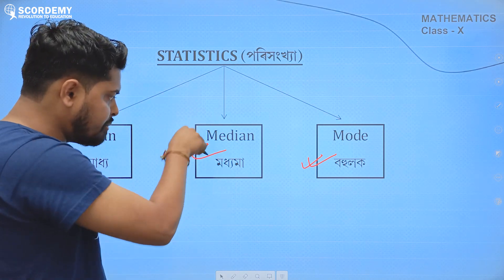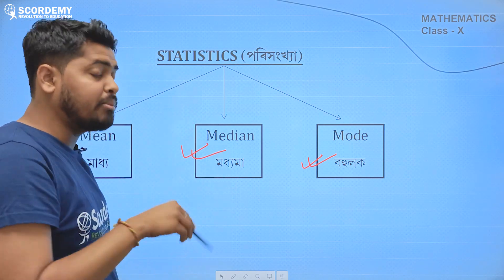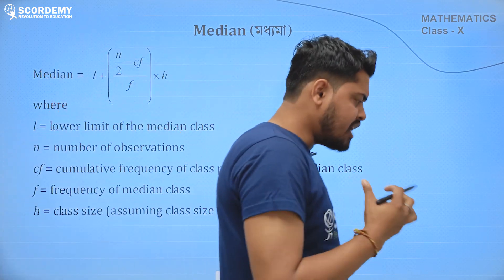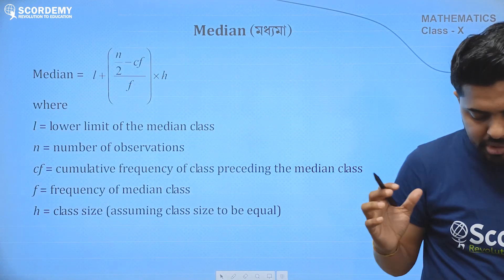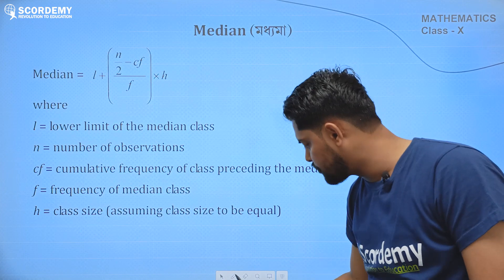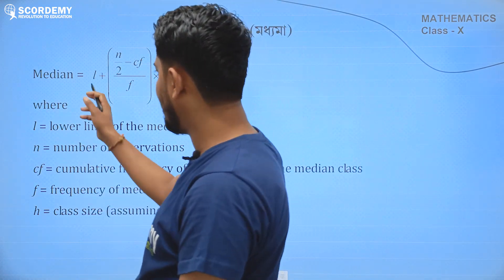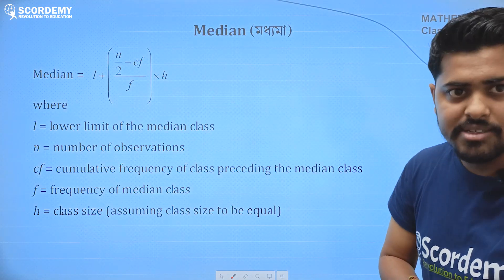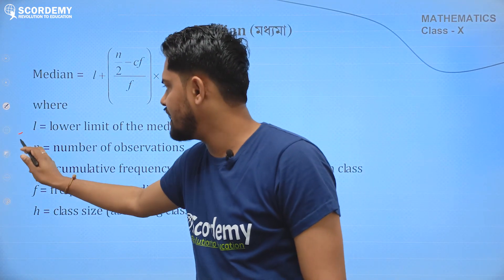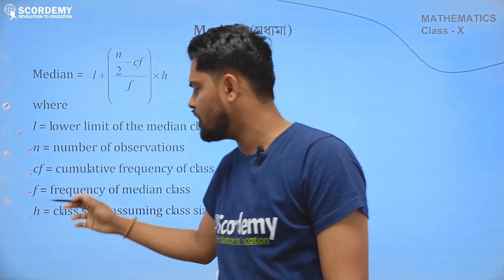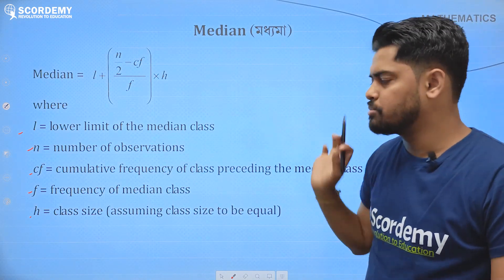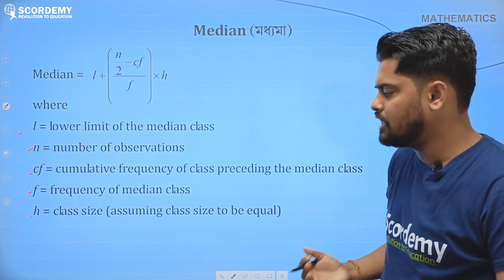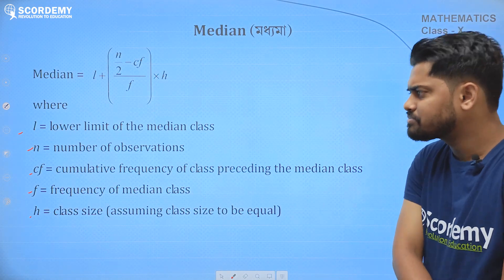So let's start. What do we need? The median. How many numbers do we need? 5 numbers. So this formula will be used for median. The formula will be: L plus n by 2 minus cf divided by f into h. Clear? So L plus n by 2 minus cf divided by f into h. I will ask you a question.